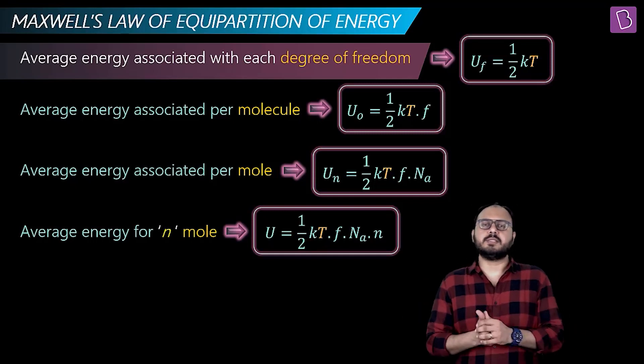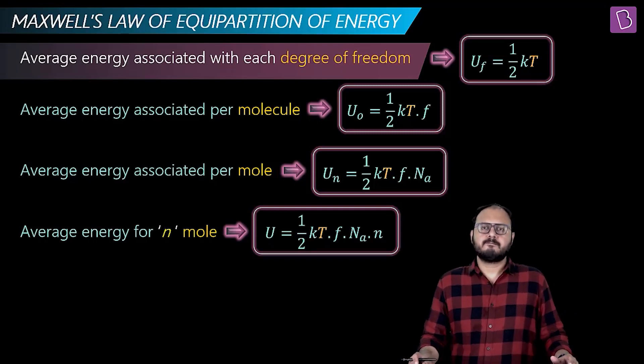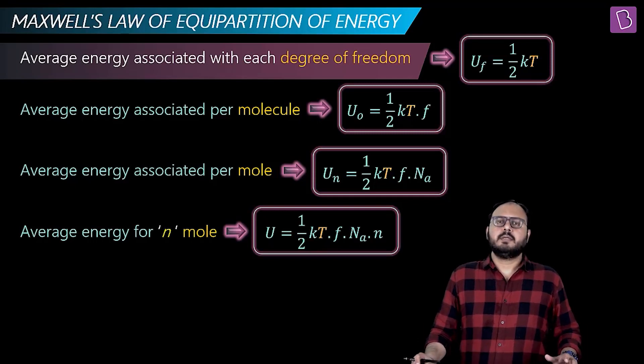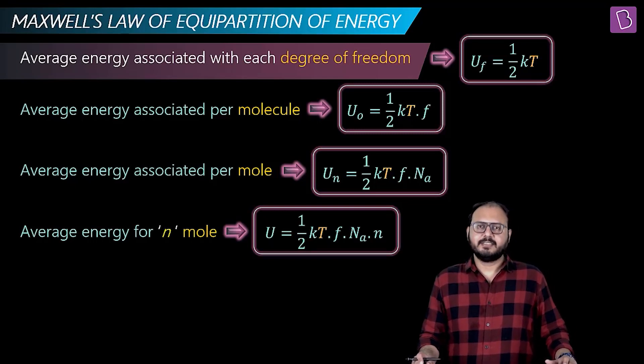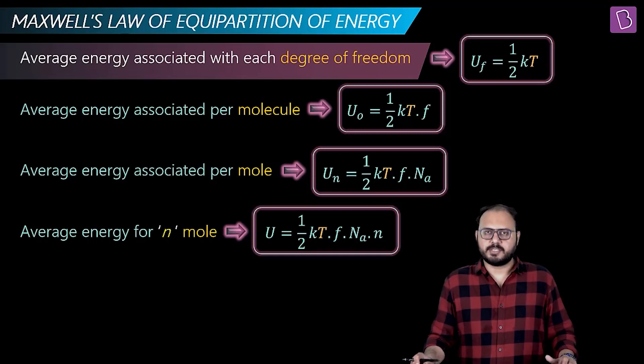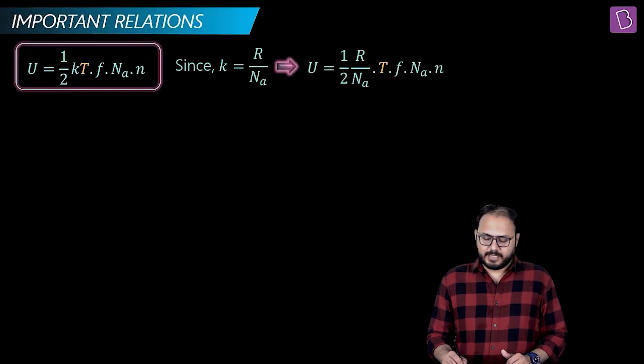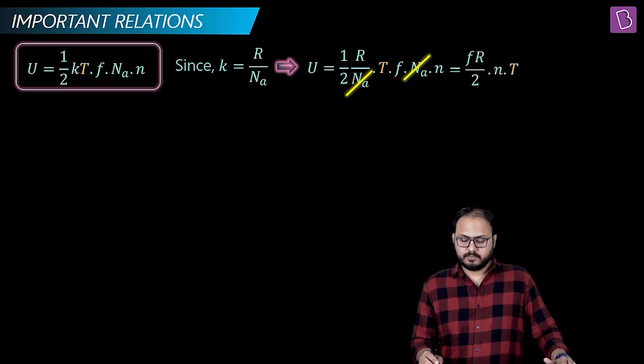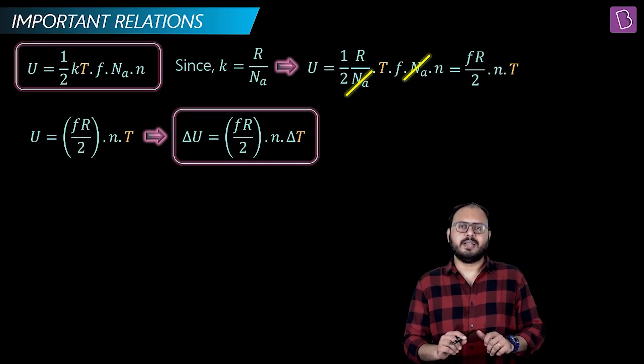From one degree of freedom, per degree of freedom, we went to per molecule. From per molecule, we went to per mole. Now if they ask you what about n moles of gas, then what? Multiply by n. Start the series: per degree of freedom, half kT. Per molecule, half kT into f. Per mole, half kT into f into Nₐ. And for n moles, half kT into f into Nₐ into n. Make sense or not? Any problems whatsoever so far? Guess what, who is there to visit us? Internal energy. And I'm about to fulfill one of the promises. Here we go. Is k equal to R by Nₐ? Yes, put it there. Nₐ, Nₐ cancel, yes. What do we get? f R by 2 nT. That means ΔU will be what? f R by 2 nΔT.